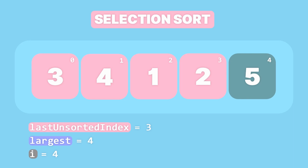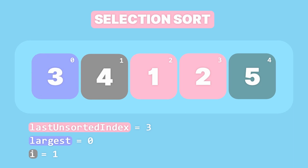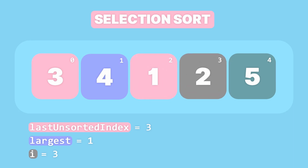We reinitialize the variable i to 1 and the variable largest to 0 for the next traversal, and we start by comparing the element at index 1 with the largest element at index 0. And 4 is larger than 3, so we set largest to 1, then we increment i to 2 and we compare the element at index 2 to the largest element at index 1. And 1 is not greater than 4 so we just increment i to 3. At this point i reached the last unsorted index, which means we completed our second traversal. Now we want to swap the largest element which is 4 with the last element in the unsorted partition which is 2.